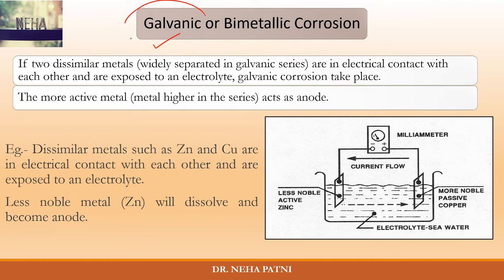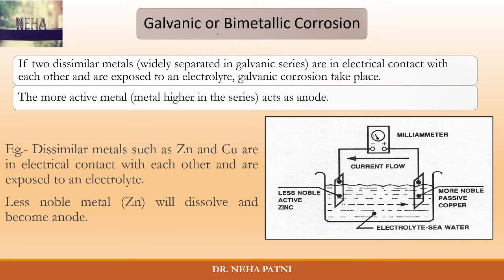Basically, galvanic corrosion — or bimetallic corrosion — as the name says: 'bi' means two and 'metal' means metal. So when there are two different metals or a formation of a galvanic cell, that type of corrosion is known as galvanic cell corrosion or bimetallic corrosion. The first condition is two dissimilar metals — there has to be dissimilarity in the metals.